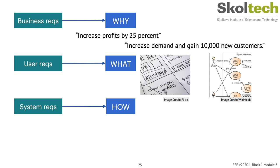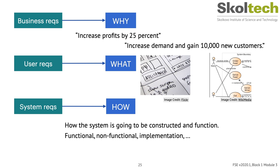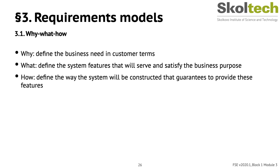System requirements attempt to answer how the system is going to be constructed and function, describing functional, non-functional, and implementation requirements. In the Why-What-How model, you define the business need in customer terms, define the system feature that will serve and satisfy this purpose, and then conceptually define how the system is going to be constructed and guarantee providing these features.